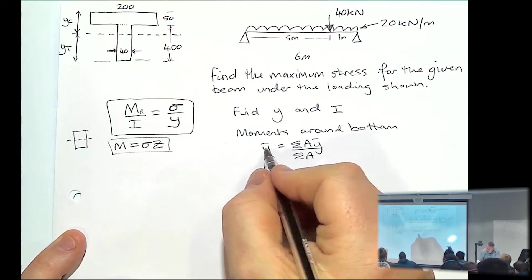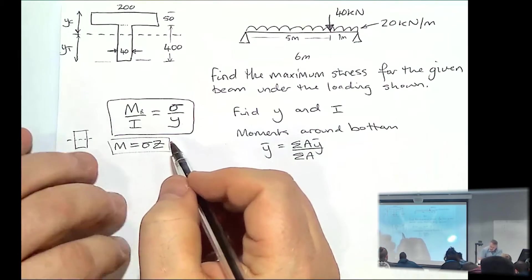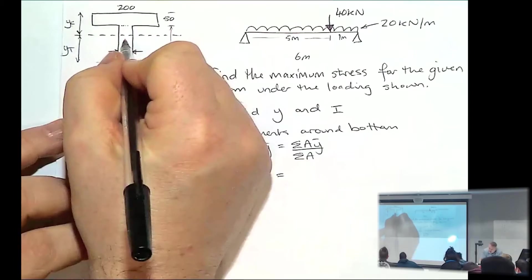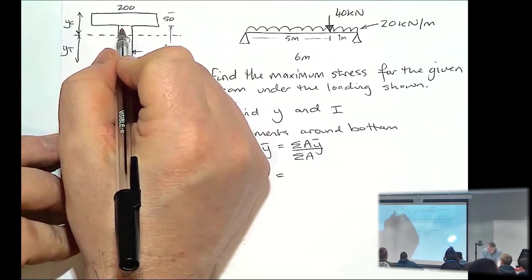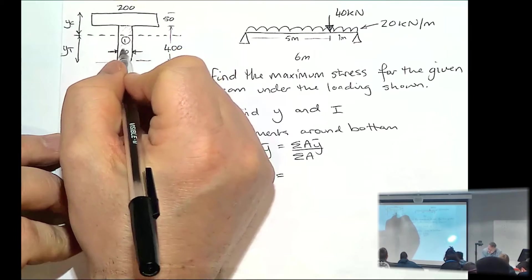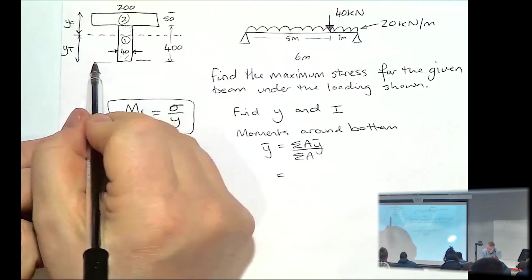So if you were to work out this, we'll class this bottom part, we'll call that 1, and we'll call the top part 2. So again, we'll take moments around the bottom.